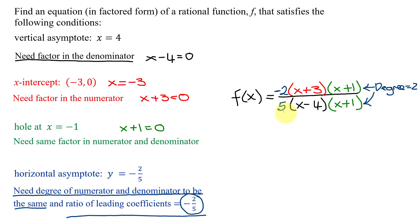So this is one function with the given characteristics. But don't forget, there are an infinite number of functions for which this is true. Because instead of multiplying by negative 2 fifths, I could have multiplied by negative 4 tenths or negative 6 fifteenths or any fraction that reduces to negative 2 fifths. But I think this is the simplest answer to give.